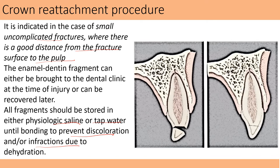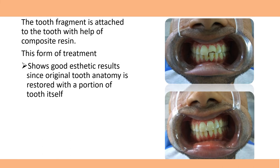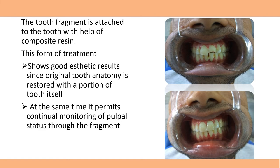Then we take flowable composite and put a thin layer of it onto the tooth surface and also onto the fragment, and then we reattach the fragment back in position. You can see it very clearly. In this case, the patient had a fall and brought the tooth fragment along with him. The surface was prepared and the fragment was bonded back. This form of treatment gives very good aesthetic results since the original tooth anatomy is restored with the portion of tooth itself. It also permits continual monitoring of the pulp status through the fragment.